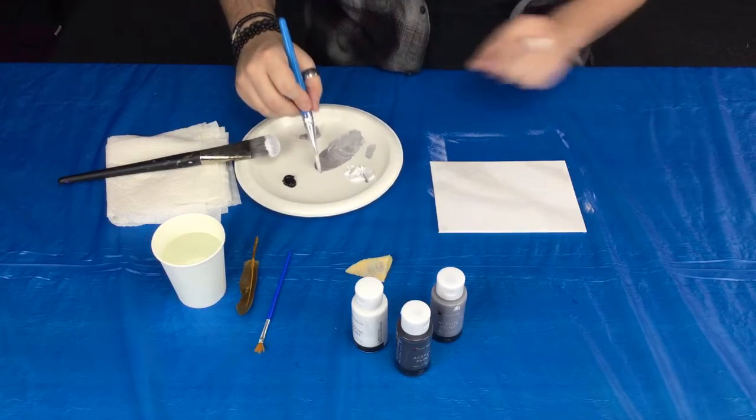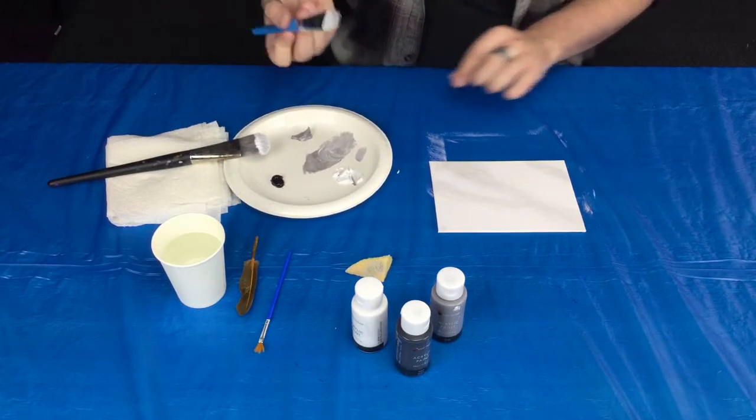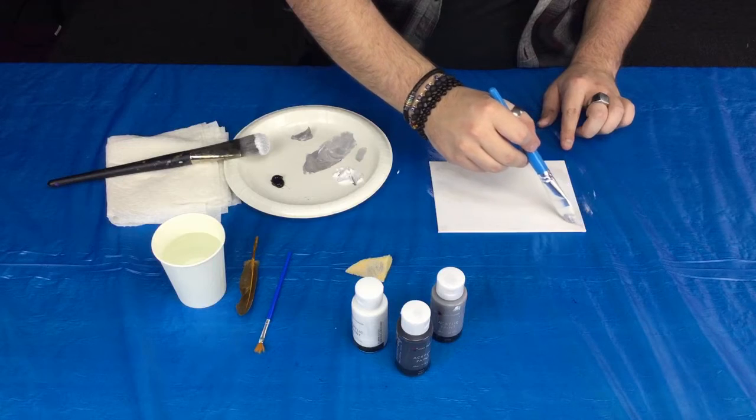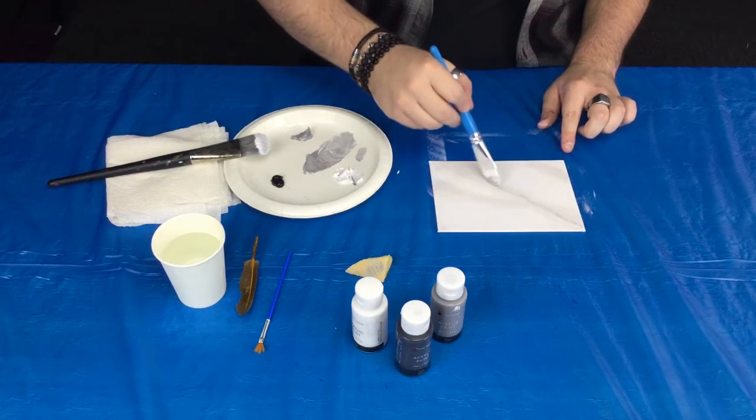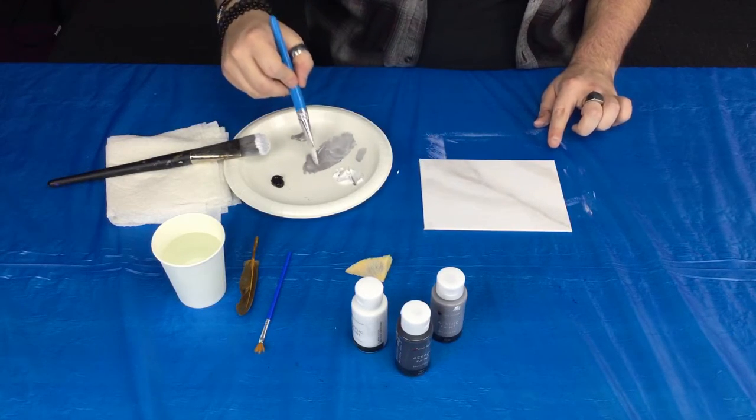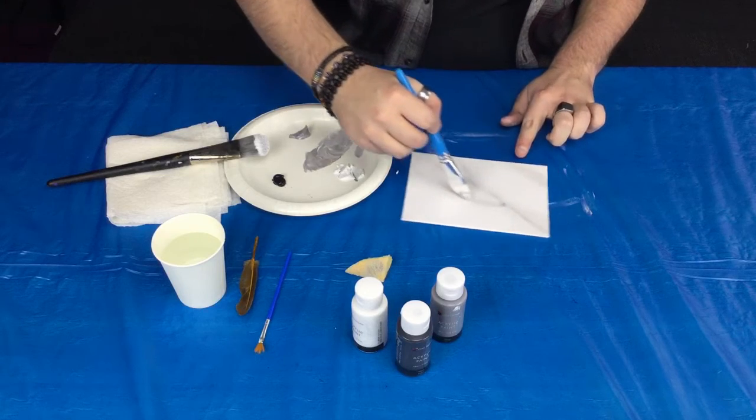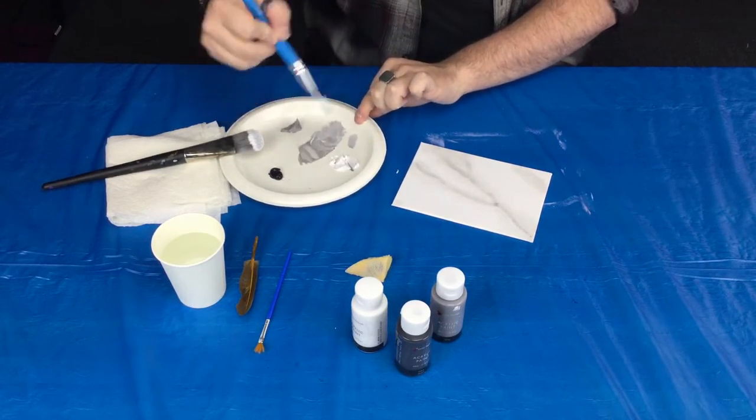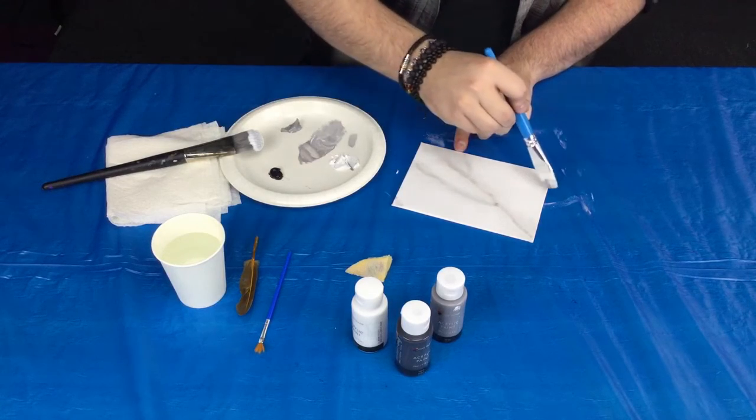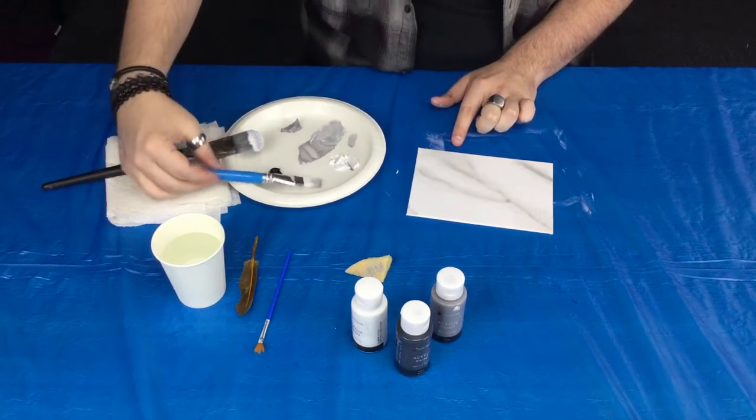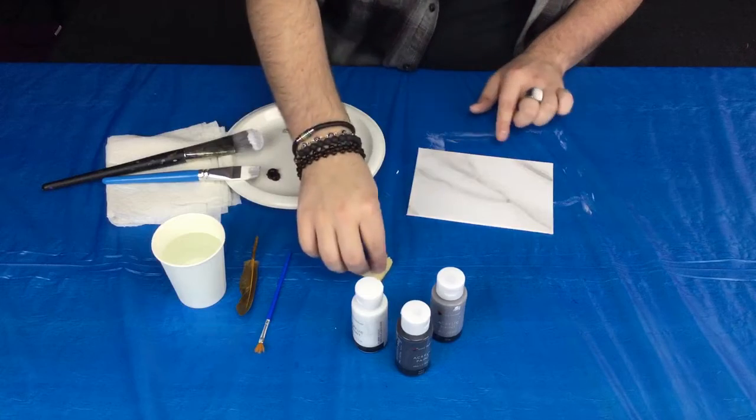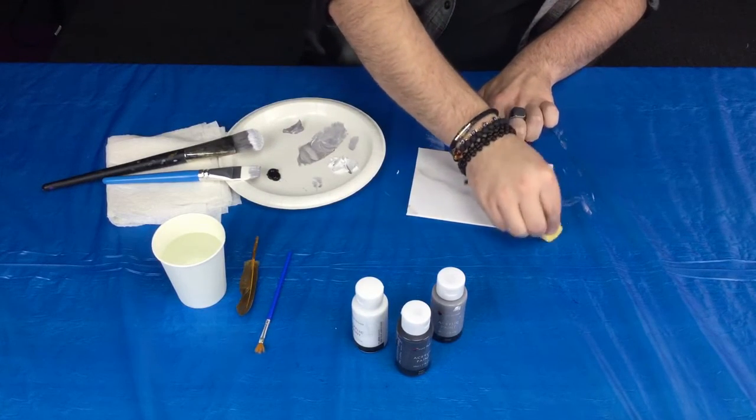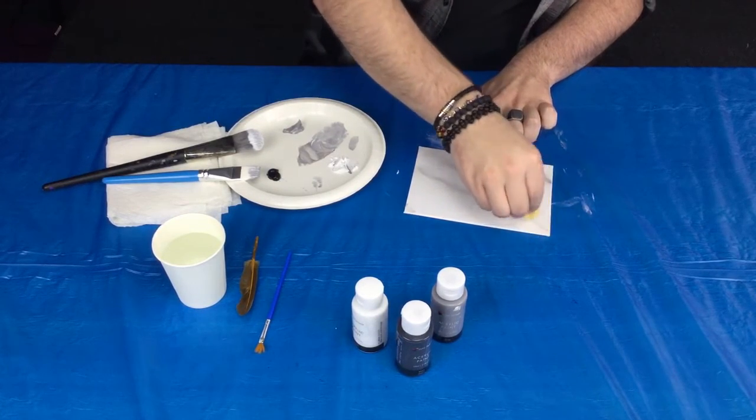All right. So you're going to go in with your slightly darker gray, and you're going to basically trace right back over where you just tamped out those lines. And you're going to do the same thing as before. You're actually going to be blending these out as well.